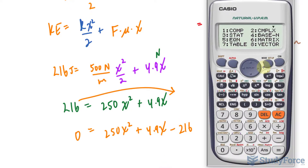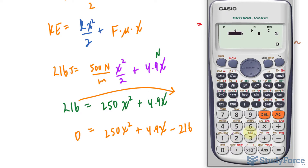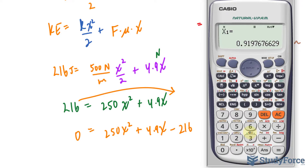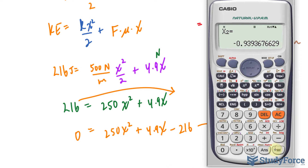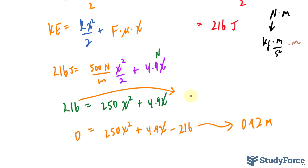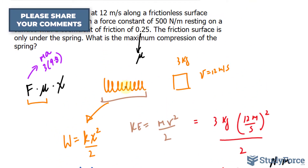Let's use a calculator function to find the roots. I'll use a = 250, b = 4.9, and c = negative 216. We end up with 0.91, which I'll round to 0.92 meters. The other answer is negative 0.93, which doesn't make sense in this context so we'll ignore it. That is the total distance — approximately 0.92 meters — that the spring will be compressed when the mass comes in contact with it.